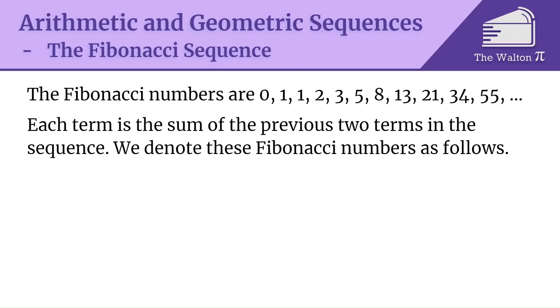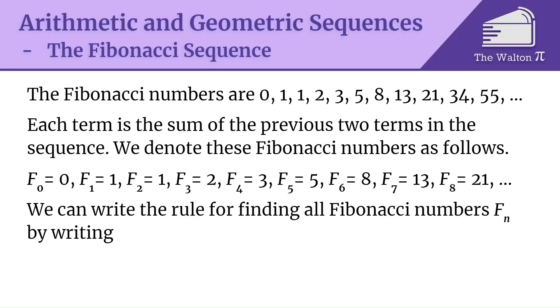So we denote these Fibonacci numbers as follows: F0 is 0, F1 is 1, F2 is 1, F3 is 2, F4 is 3, F5 is 5, F6 is 8, F7 is 13, F8 is 21, and so on. We can write the rule for finding all Fibonacci numbers Fn by writing F0 is 0, F1 is 1, and for n greater than or equal to 2, Fn is Fn-1 plus Fn-2.